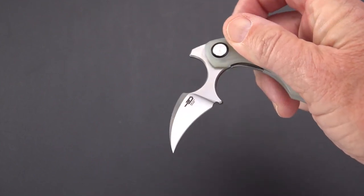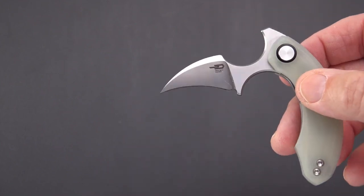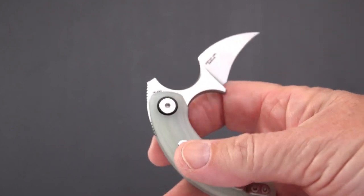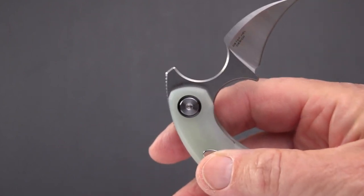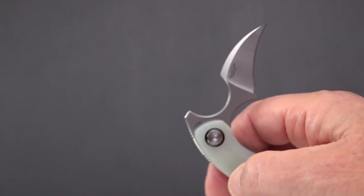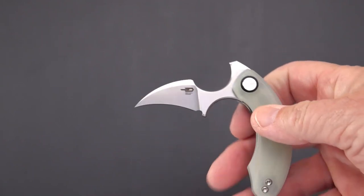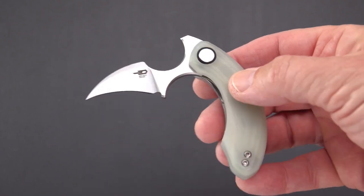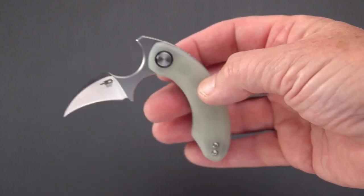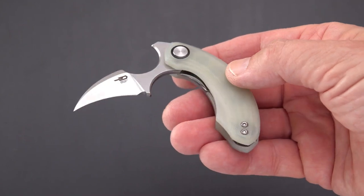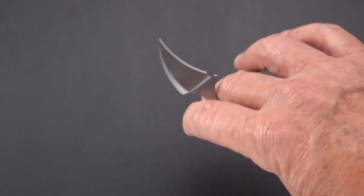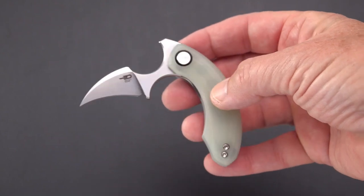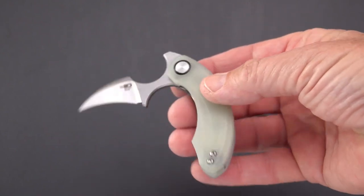We'll call it a budget because it is a push claw dagger, if you want to call it that, made from 14C28N and not from Damascus or S35VN or some of the other higher-end steels that it's previously been made in.